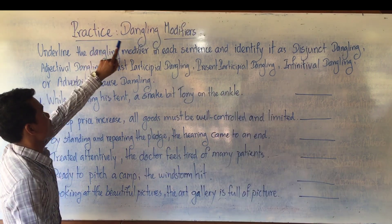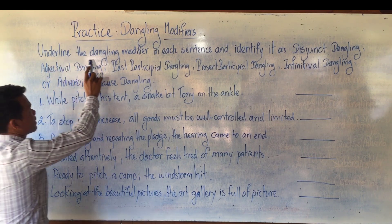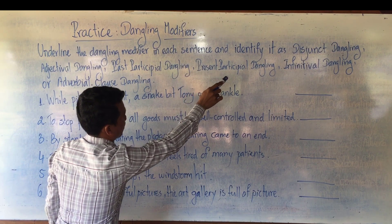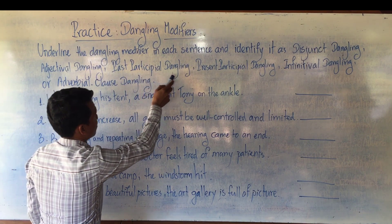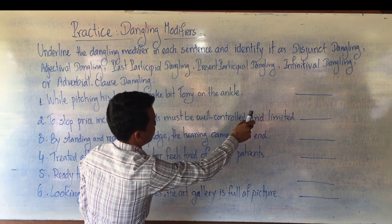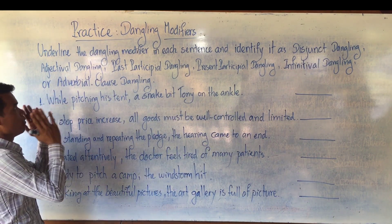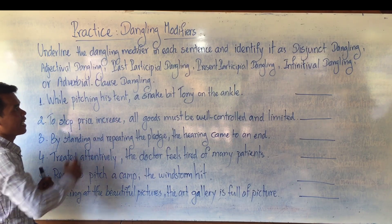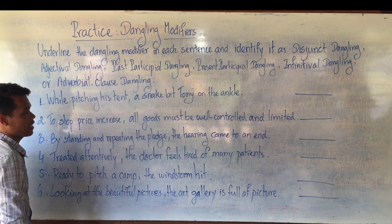How about today's practice? Practice: dangling modifiers. The direction is: underline the dangling modifier in each sentence and identify it as disjunct dangling, adjective word dangling, participial dangling, present participial dangling, infinitive word dangling, or adverbial clause dangling. First, you have to underline the dangling, and then you can identify it as the type of dangling.